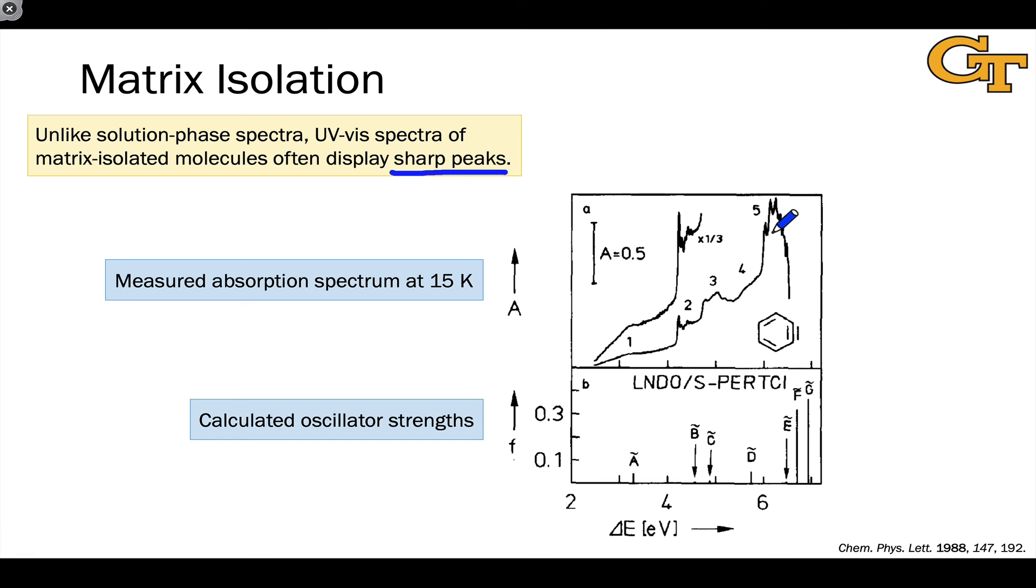Lowering the temperature allows us to see this very fine vibrational structure and make very confident calculations of the oscillator strengths associated with various transitions. It also often allows us to tease out overlapping transitions. For example, peaks 2 and 3 might appear as a single peak in a solution phase spectrum of benzyne, while the matrix isolated spectrum shows very clearly that these are separate transitions.